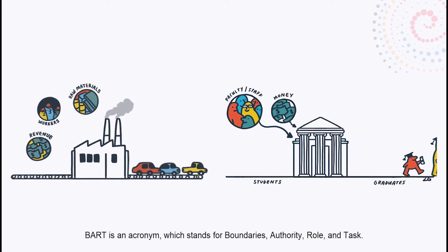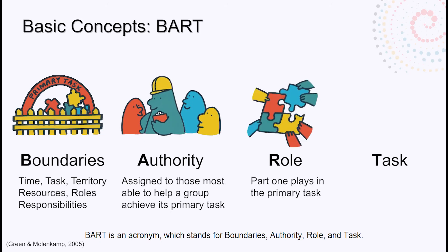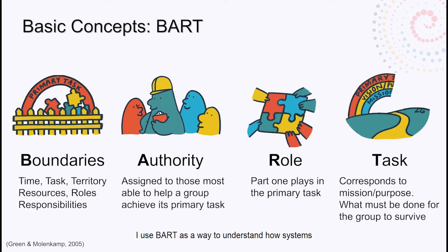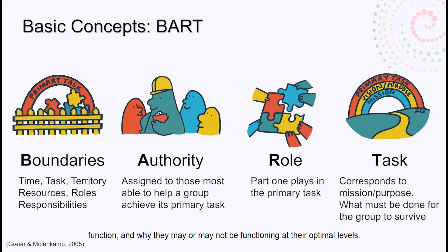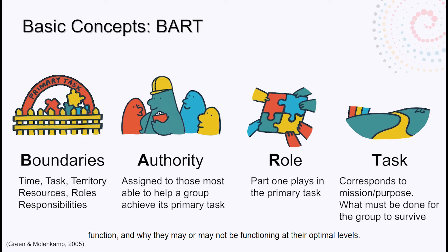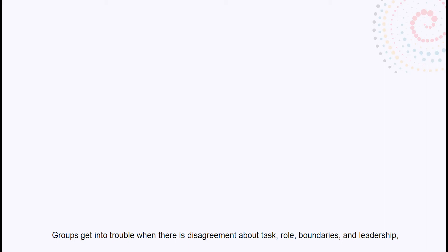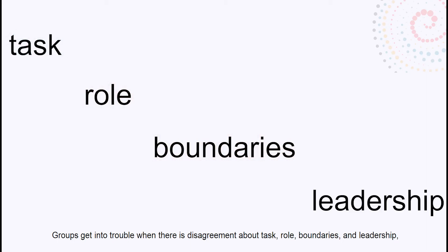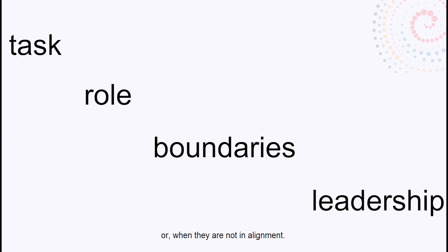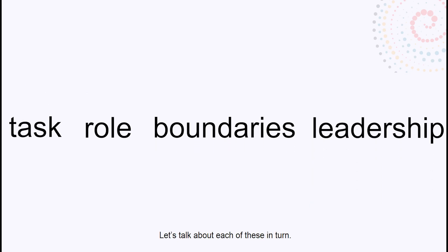BART is an acronym which stands for Boundaries, Authority, Role, and Task. I use BART as a way to understand how systems — that is, individuals, groups, organizations, or societies — function, and why they may or may not be functioning at their optimal levels. It's a very simple conceptual and diagnostic tool that can help uncover complicated dynamics. Groups get into trouble when there is disagreement about task, role, boundaries, and leadership, or when they are not in alignment.